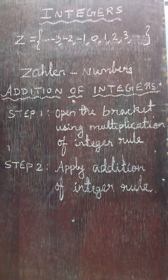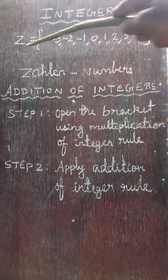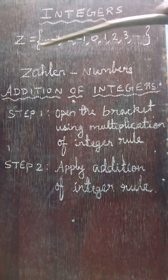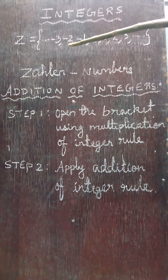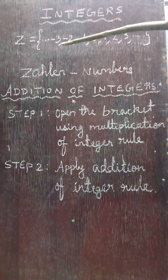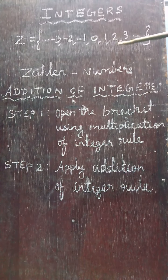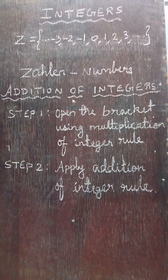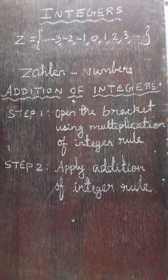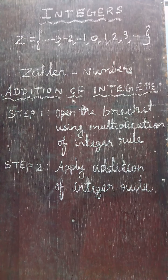Now we are going to learn integers. Integers are denoted by the capital letter Z. Integers are a collection of numbers — negative numbers, zero, and positive numbers. Negative numbers, zero, and positive numbers all together constitute integers.